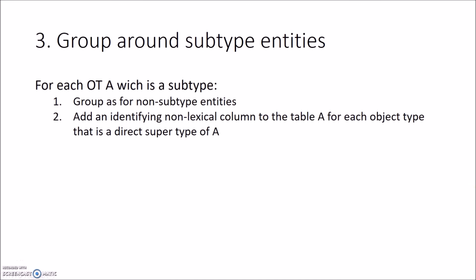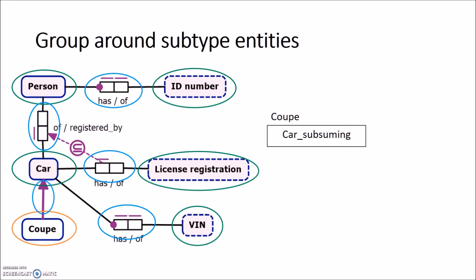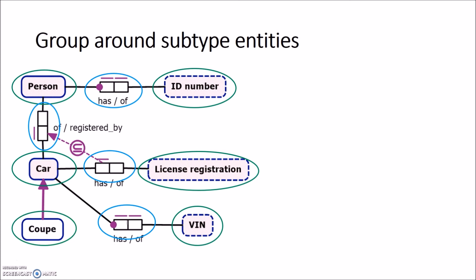Now we apply the same logic as in the previous step, but for subtype entities. We add an extra identifying non-lexical column to these tables that refers to their direct supertype. Our schema contains one subtype — 'coupé' — so we create a table for coupé. This object type doesn't have any fact types linked to it, so no columns are created. We do have to create a column for its supertype: we call it 'car subsuming' and mark it as candidate key, since coupé is relational model referable via the subtype aspect. Now all our object types are marked.